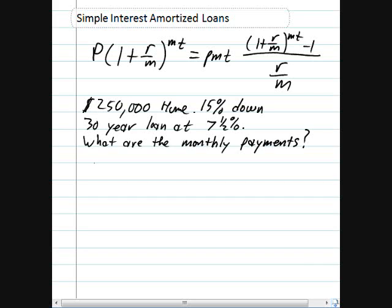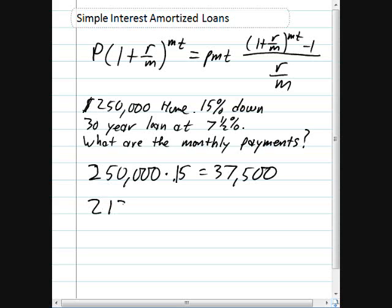First of all, we should compute what our down payment is. The loan, or the house, was $250,000, and we made a down payment of 15%, which is $37,500. If we subtract that from the cost of the home, we get our loan amount, which is $212,500.